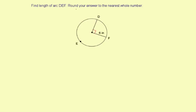Find length of arc DEF, round your answer to the nearest whole number. So DEF is going to go around this way, like that.